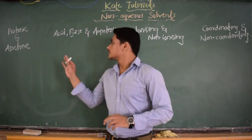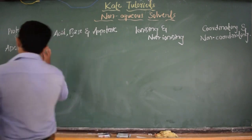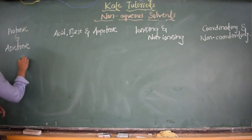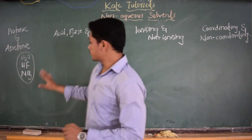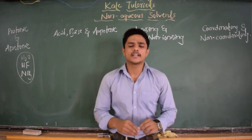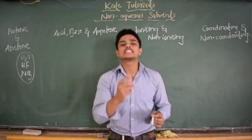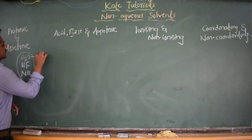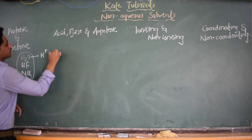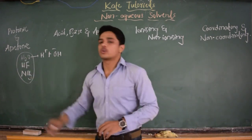First we should discuss what protonic and aprotic solvents are. Examples of protonic solvents are H₂O, HF, and NH₃. From these it is clear that protonic solvents are solvents which have the capability to donate H⁺ ions. For example, from H₂O we can get H⁺ — it gives H⁺ plus OH⁻. So we are going to get H⁺ from this solvent, making it a protonic solvent.